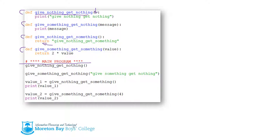You can see the four different types of functions here: the one where you give nothing and get nothing, the one where information is passed but nothing is returned, the one where no information is passed but something is returned, and the one where information is both passed and returned. You call functions by using their name with brackets at the end. If the function requires information, you put it in the brackets — it can be an integer, a string, or whatever is required. If a function returns a value, you need to do something with it, like storing it in a variable.